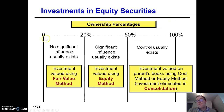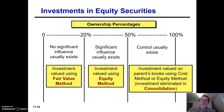If you have between zero and 20% ownership, generally speaking, you do not have significant influence over that corporation. In that case, we're going to account for your investment using the fair value method, which we'll get into later.